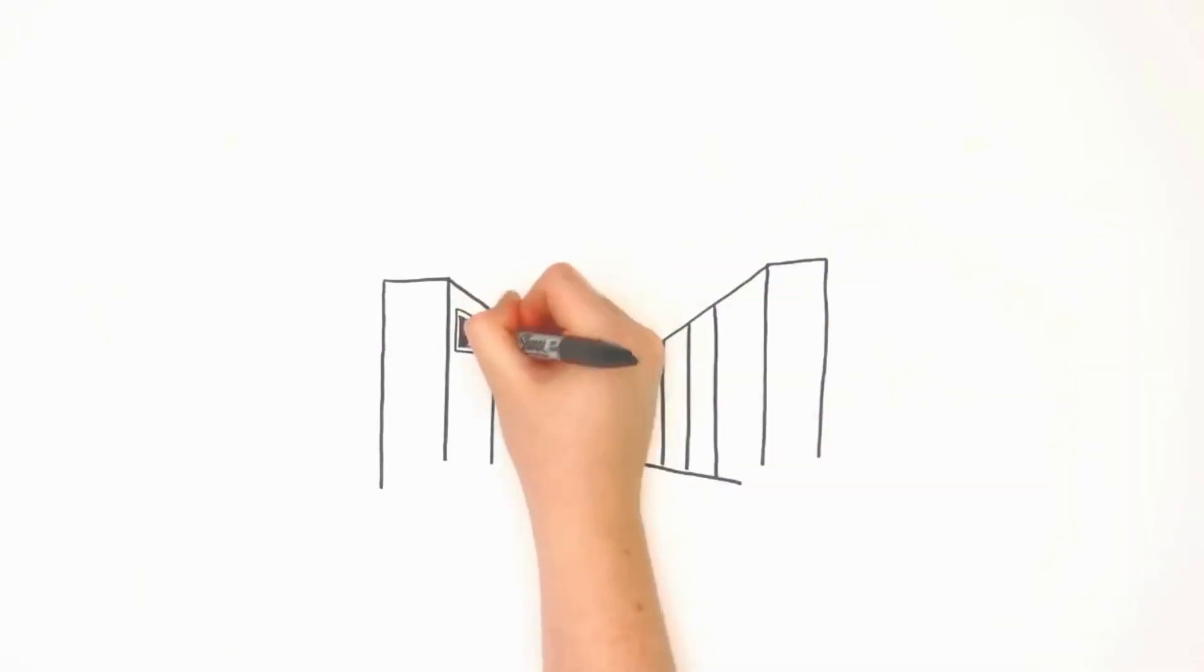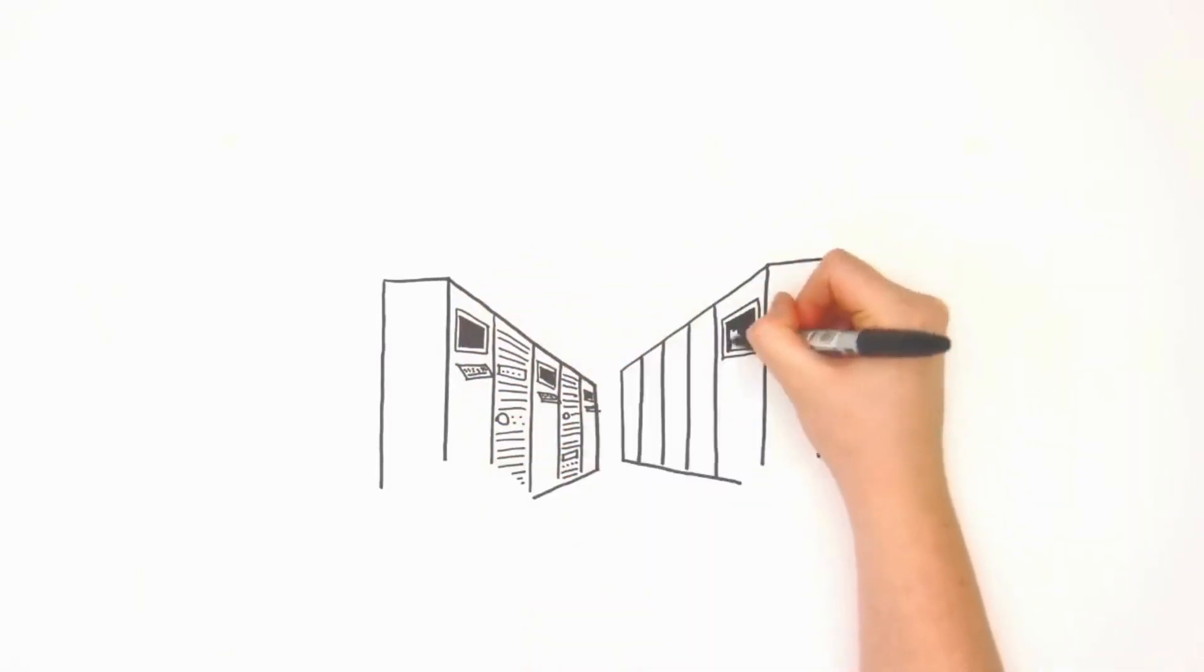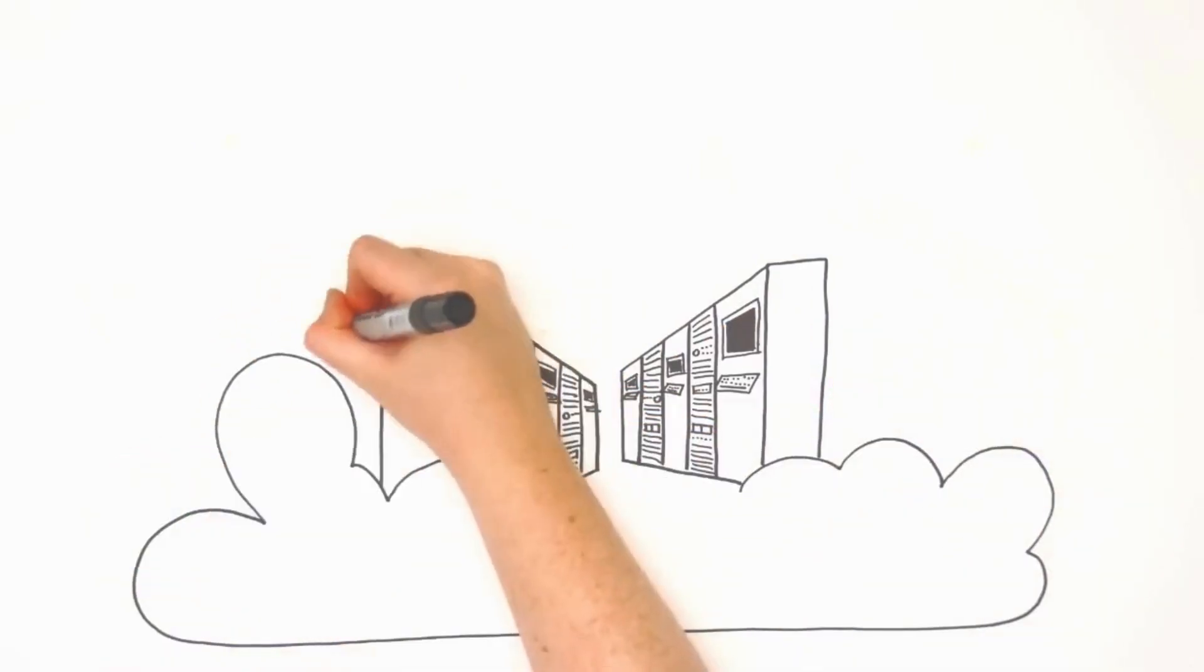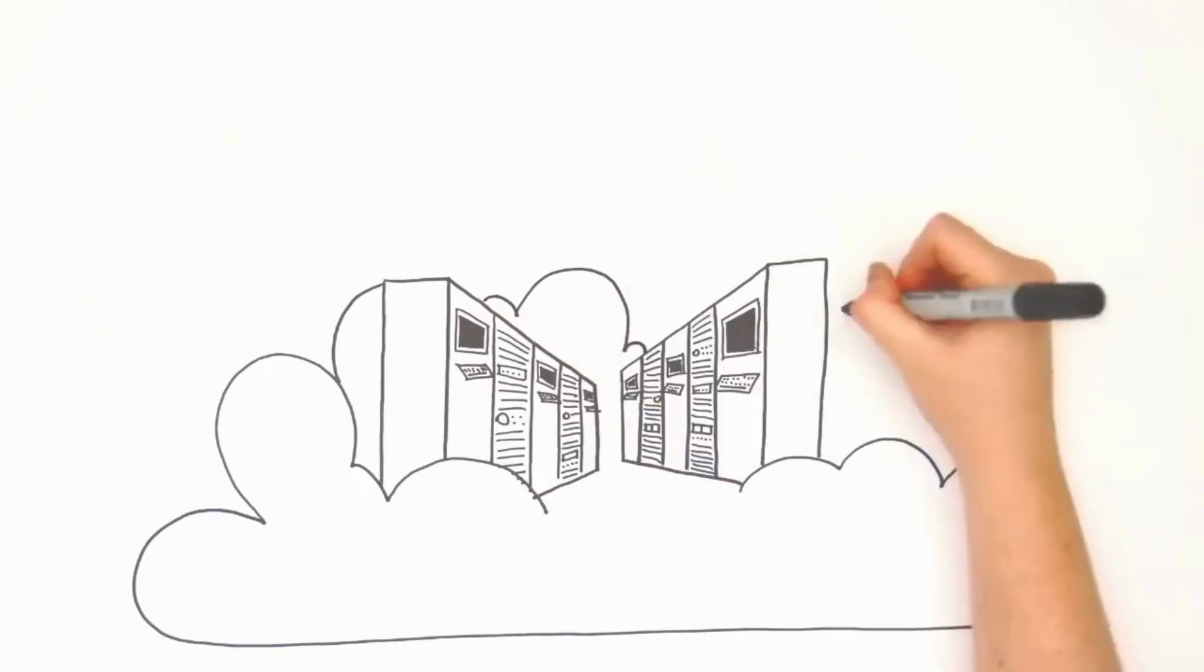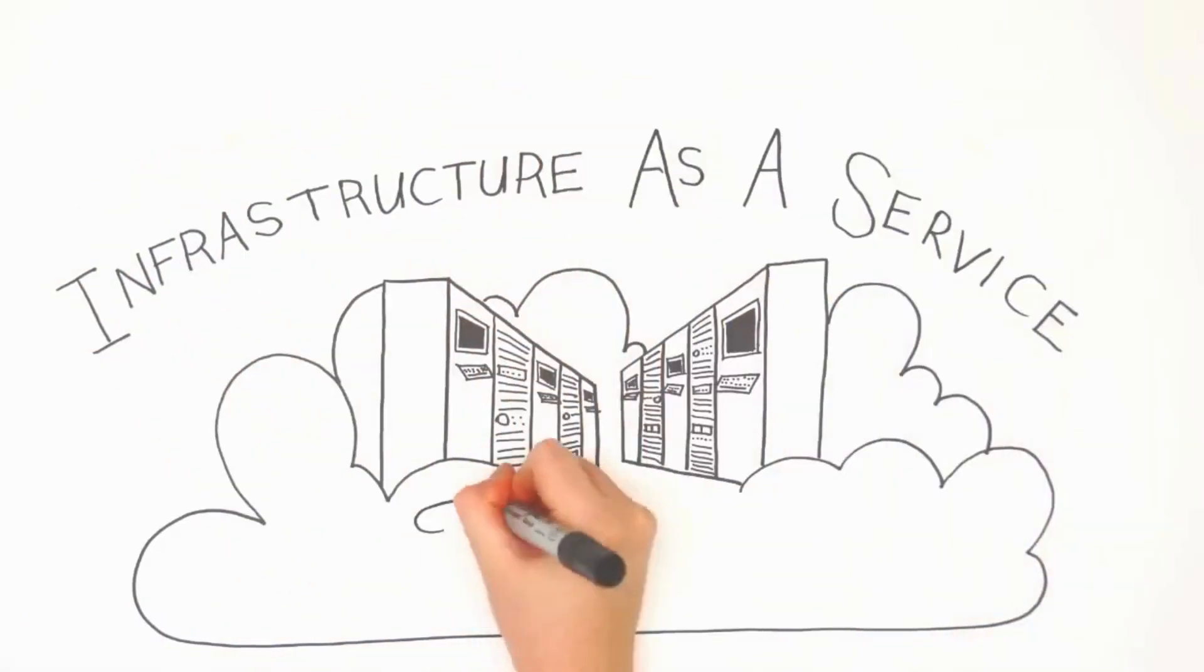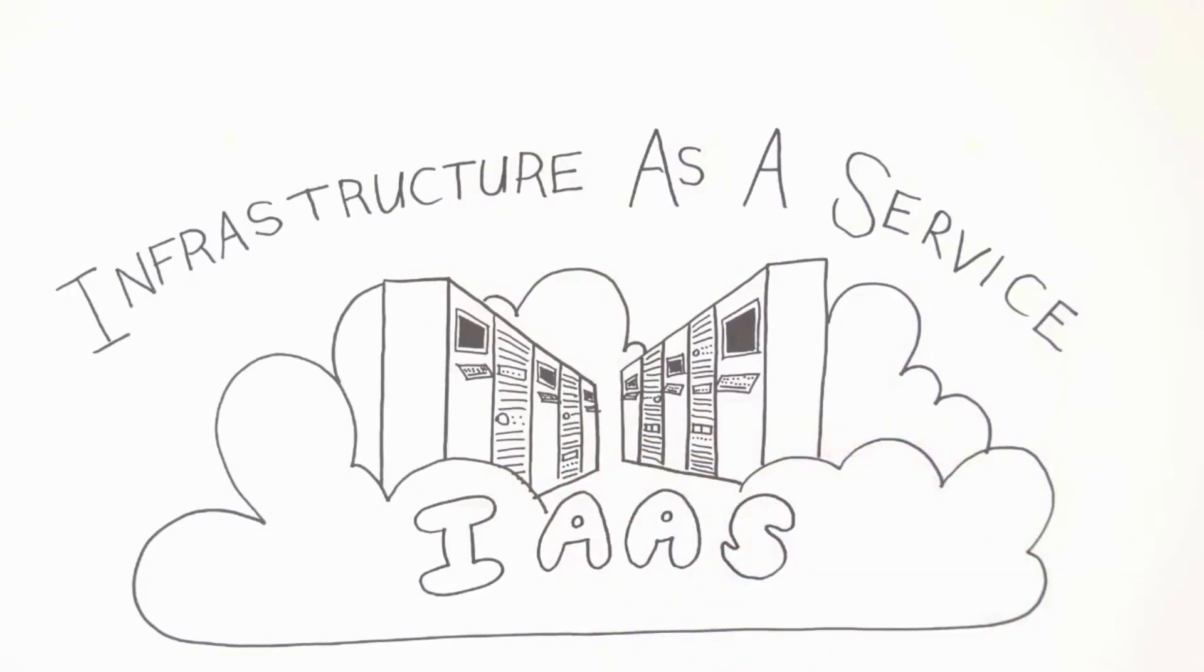Just like electricity 100 years ago, a business can now access all the cloud computing infrastructure it requires as a service for all its users, wherever they are, on whatever device they use. This is called infrastructure as a service, IaaS for short.